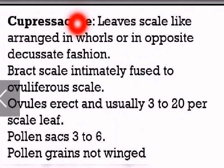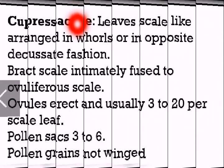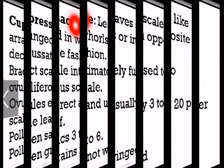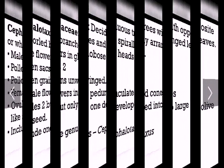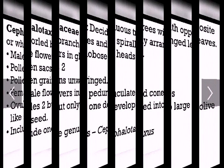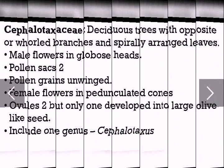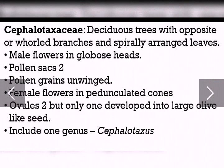Next, Cupressaceae: leaves are scale-like, arranged in whorls or in opposite decussate fashion. The bract scale is intimately fused to the ovuliferous scale. We can see 3 to 20 erect ovules per scale leaf. Pollen sacs range from 3 to 6. Here also we can see unwinged pollen grains.